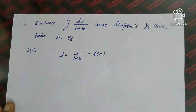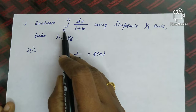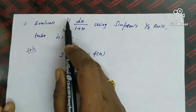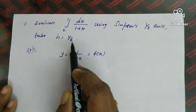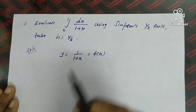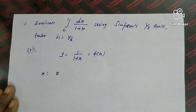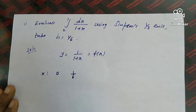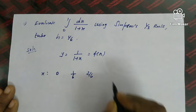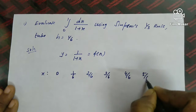Here y = f(x) = 1/(1+x). For the interval 0 to 1 with h = 1/6, the x values start at 0 and increase by 1/6: x₀=0, then 1/6, 2/6, 3/6, 4/6, 5/6, up to x₆=1.